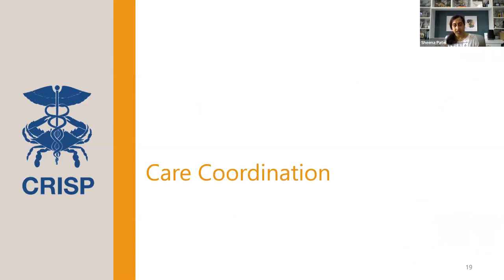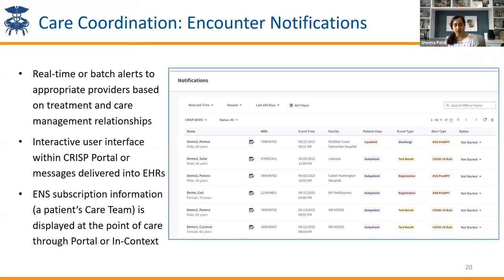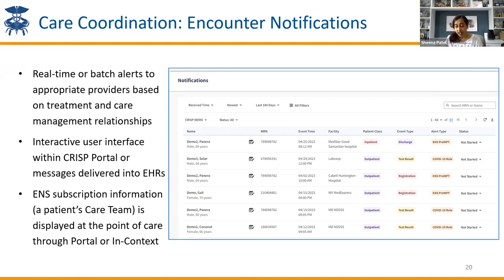For our care coordination bucket, I mentioned our encounter notification service — real-time or batched alerts to providers based on a treatment relationship. You would tell us about your patients by sending us a patient roster, either manually or automatically through your EMR. We would then alert you anytime a patient on that list is in and out of a hospital, a SNF, or even has a primary care appointment if that primary care provider is sending us the data. It's a great interactive tool to track your patients, look at what they were admitted for, and coordinate care to get them back for follow-ups they need.